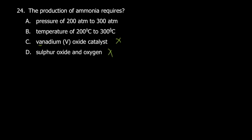Regarding temperature: the question states 200 to 300°C, but the typical temperature in the Haber process is around 450°C — low by industrial standards but not as low as 200–300°C. The pressure is correct though; it can range from as low as 200 to as high as 400 atmospheres.